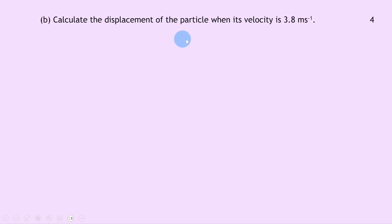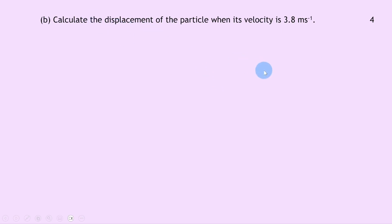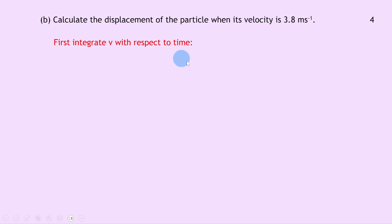Part b says to calculate the displacement of the particle when its velocity is 3.8 metres per second — four marks available. We were given an expression for acceleration, and in part a we found an expression for velocity. Since we want displacement, it's a good idea to first find an expression for displacement by integrating v with respect to time.